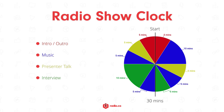Looking at a show clock, it has a mix of music, presenter talk, interview, and an intro and outro to bookend the start and end of the show. By organising your topics using a radio show clock, you can give your content a good, fluid structure that helps you to sound more professional. Different presenters all have different presenting styles, and you can use the radio show clock format as strictly or as loosely as you like.